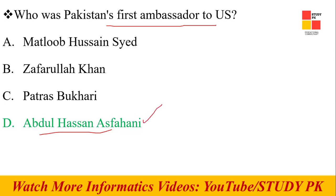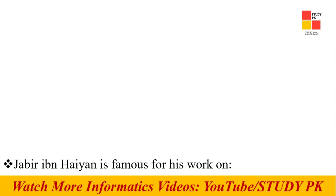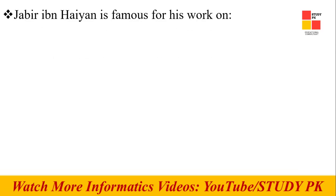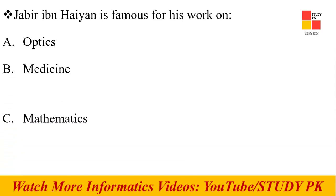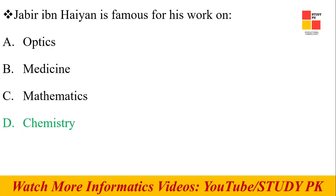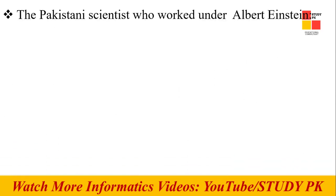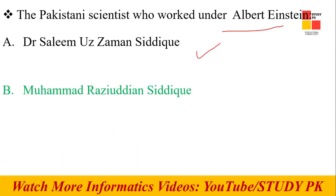Next question: Jabir ibn Hayyan is famous for his work on chemistry. Next question: A Pakistani scientist who worked under Albert Einstein — this is the right option.